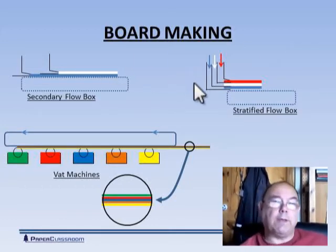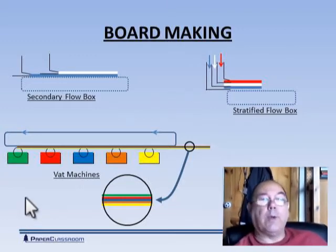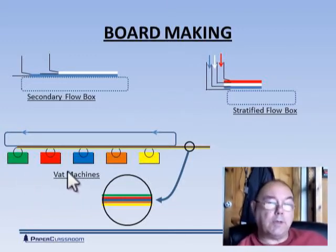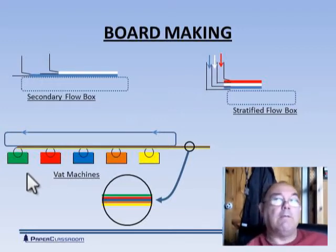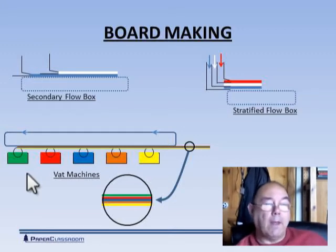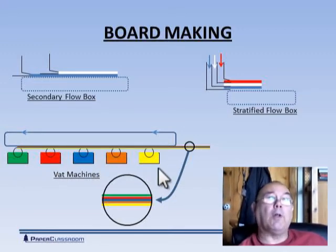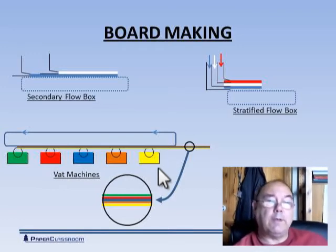These are essentially fourdrinier-based configurations, but that's not the only way of doing these things. Another way is to use a set of VAT machines. Remember we talked about VAT machines in the history of papermaking modules. So here for example we've got five VATs. I've made them all different colors to represent different furnishes.